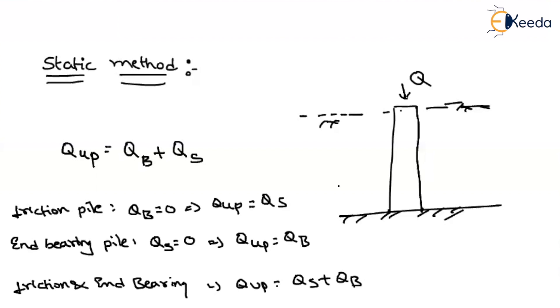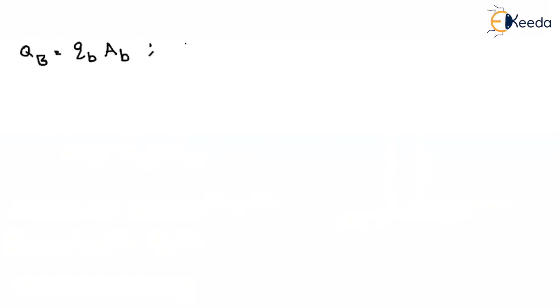Depending upon the type of pile, we have to consider the capacity accordingly. End bearing capacity equals end bearing resistance QB multiplied by the area of end bearing AB. Here QB is the end bearing resistance, which is given in the question. If you multiply the end bearing resistance by the base area, you get the end bearing capacity.